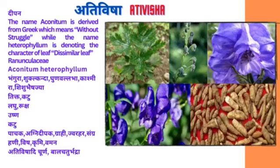Therapeutic uses (Aamit Prayog): Pachak, Agni Dipak, Grahi, Jwarhar, Sangrahi, Vishagna, Krimighna, Vamak. Special preparations: Ativishadhi Churna, Balcha Trikabhadra.